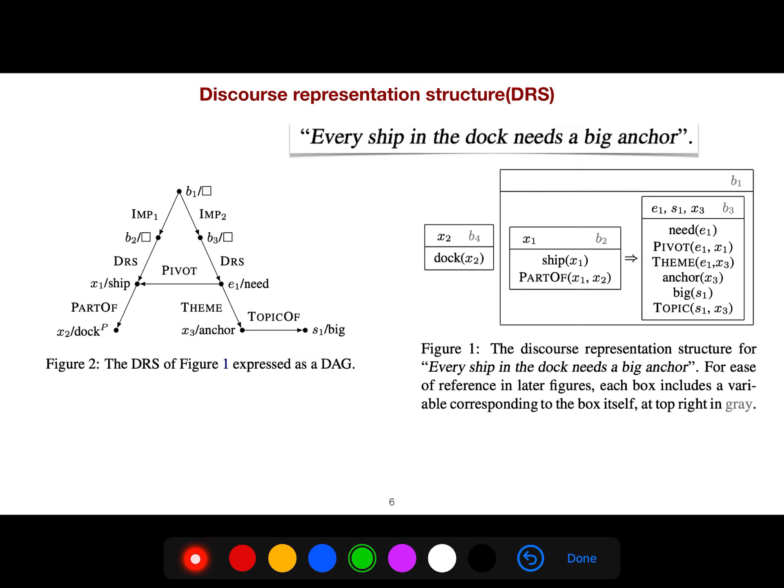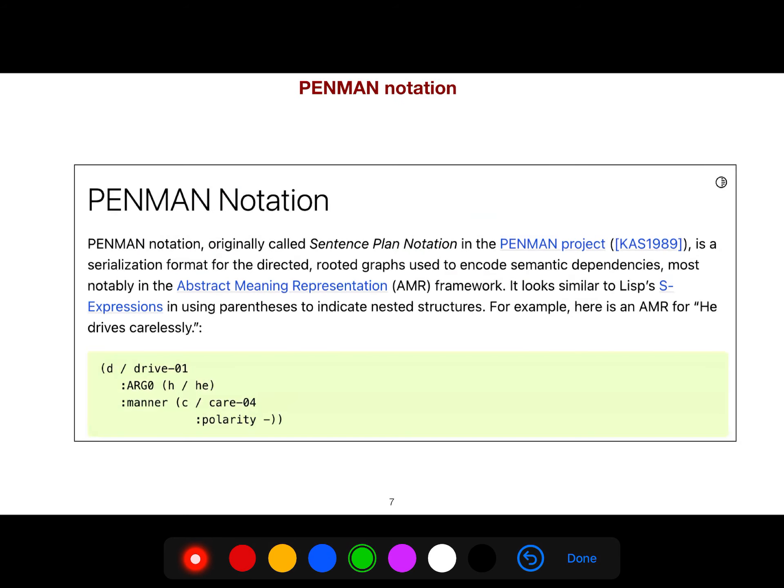In this example, every ship in the dock needs a big anchor, you can represent it by some boxes. For example, box 1, box 3, box 2, but box 2 implies box 3 and box 4 is independent of box 1. Here you see there are two paths. It is a directed acyclic graph, and there is no cycle in here.